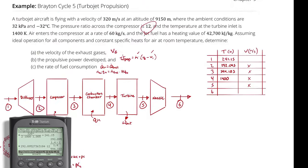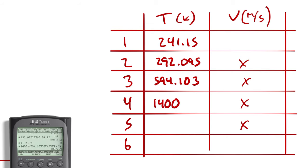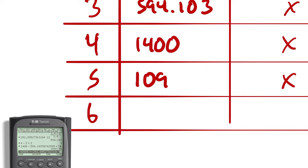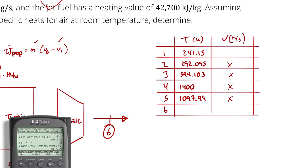Applying T5 = T4 - T3 + T2 = 1400 - 594.103 + 292.095: T5 = 1097.99 Kelvin. That is the temperature of the gas as it leaves the turbine.